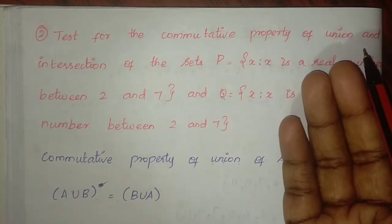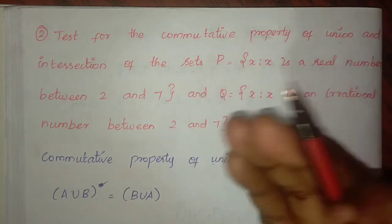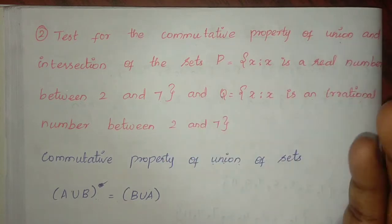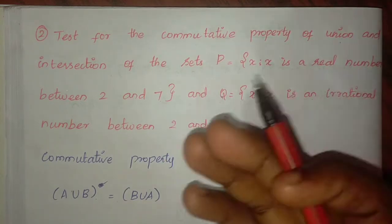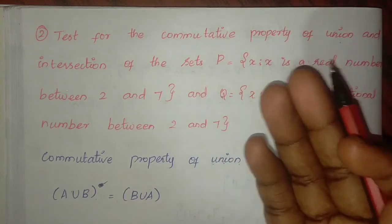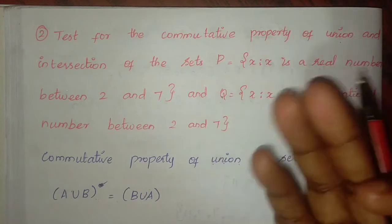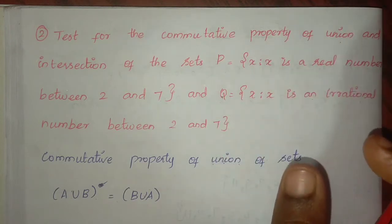For intersection: A intersection B equals B intersection A. If both sides are equal, the commutative property of intersection is satisfied.